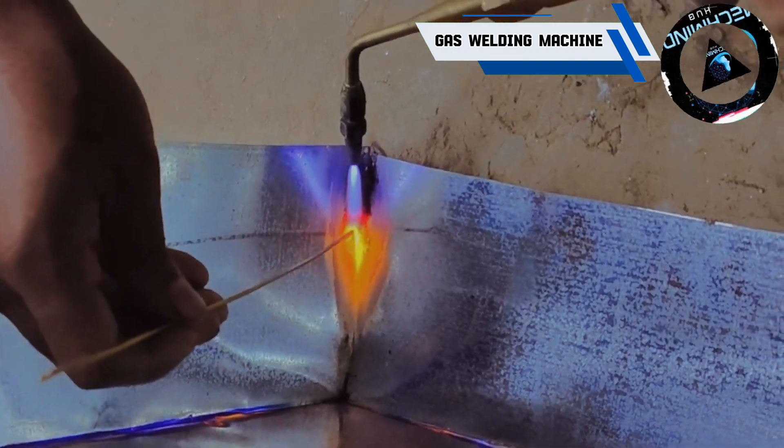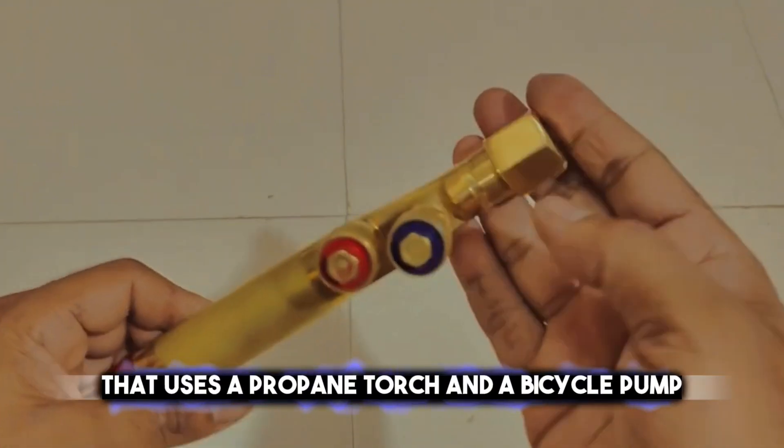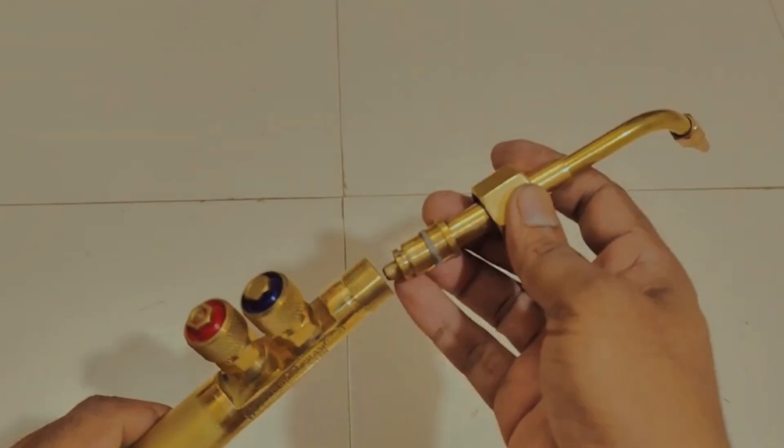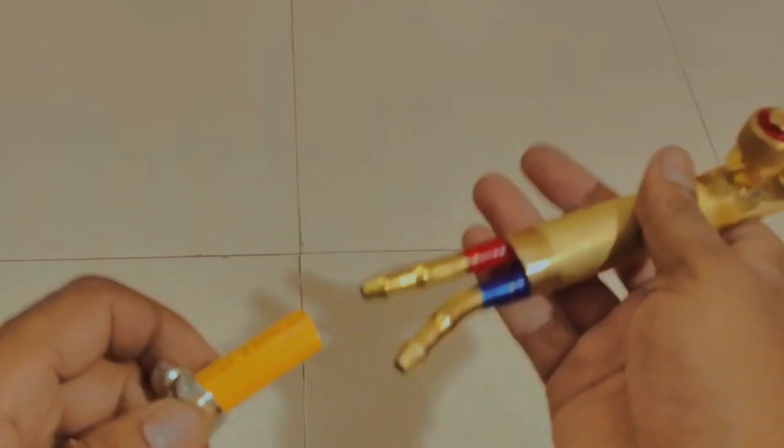Another example of an improvised welding machine is a gas welding machine that uses a propane torch and a bicycle pump. Gas welding is a type of welding that uses a flame to heat and melt the metal pieces that are to be joined.